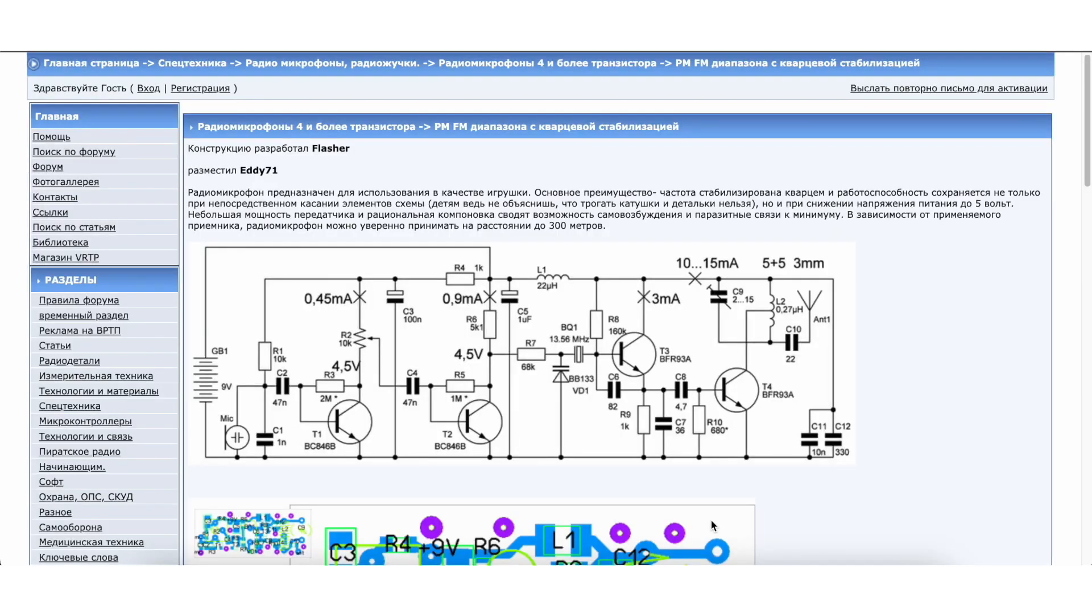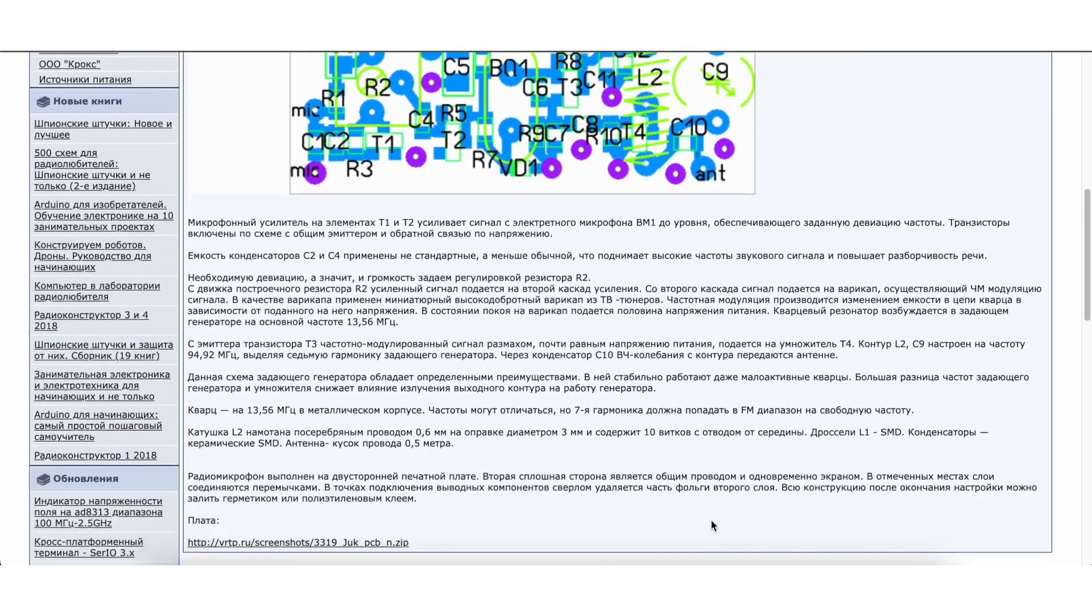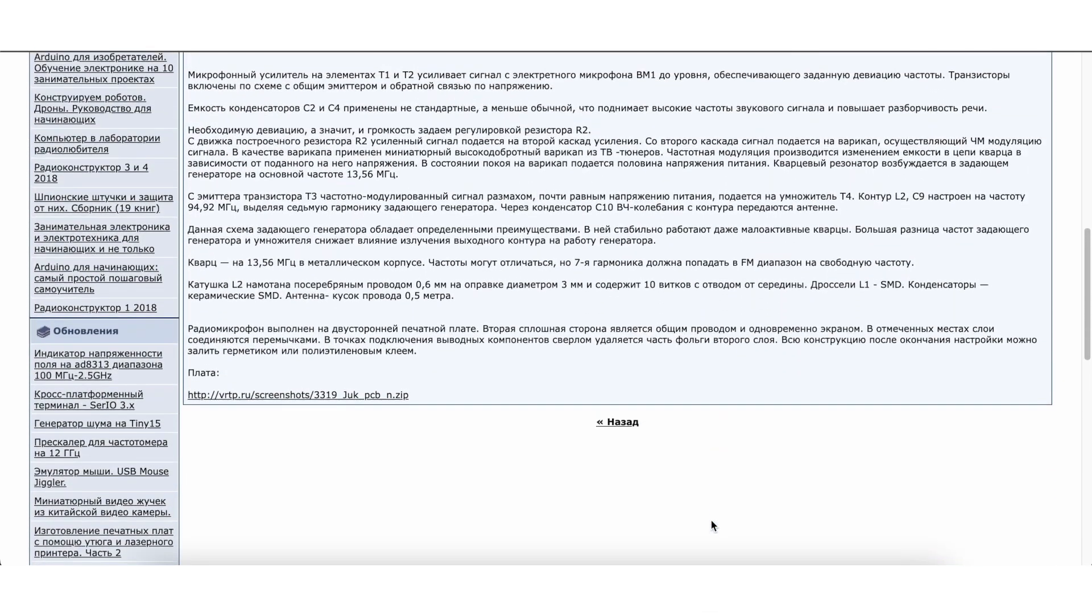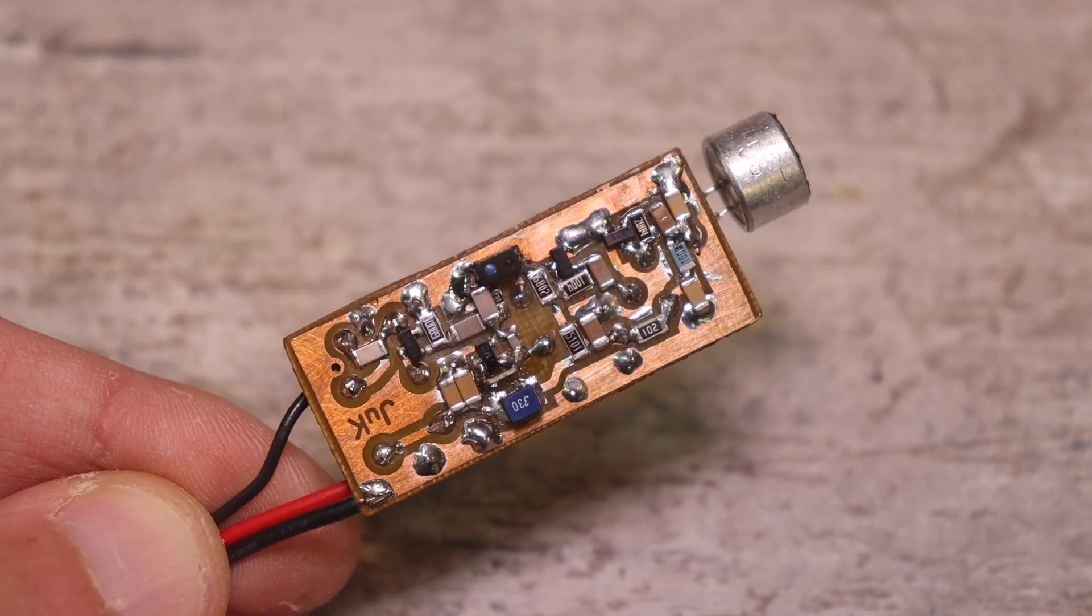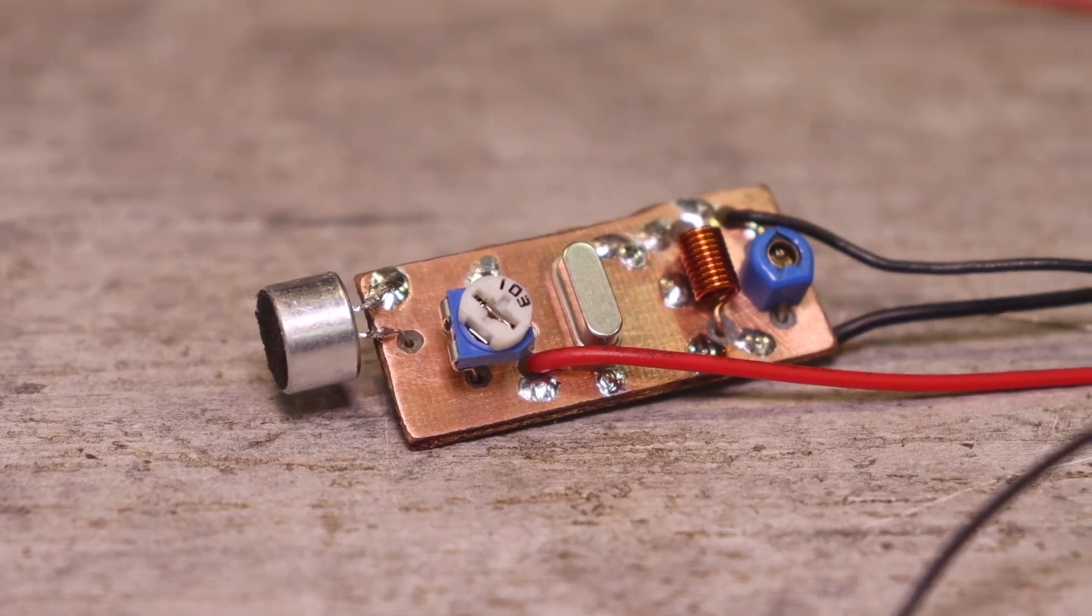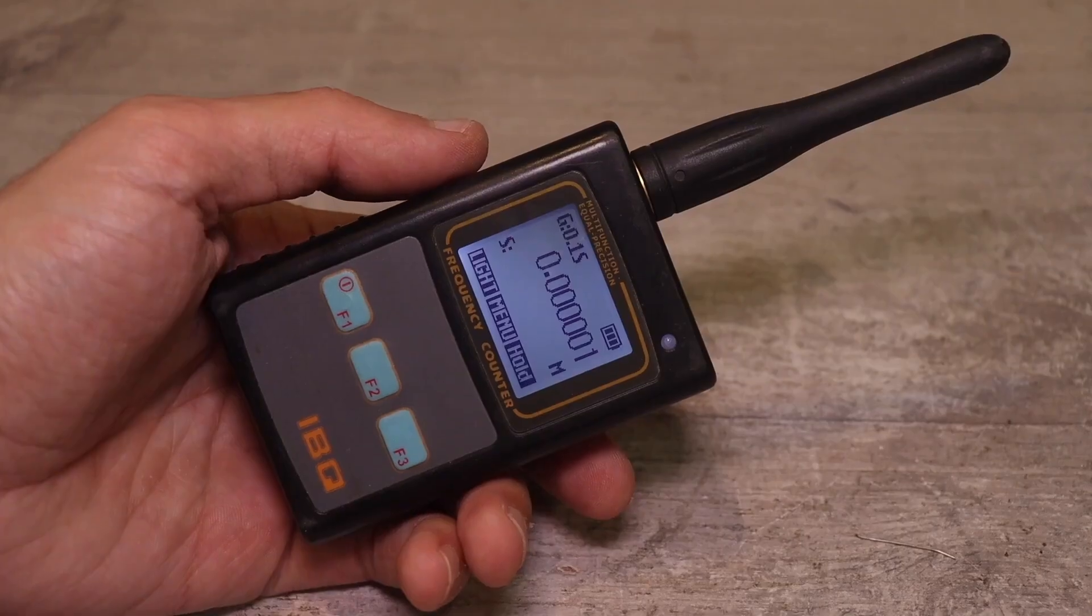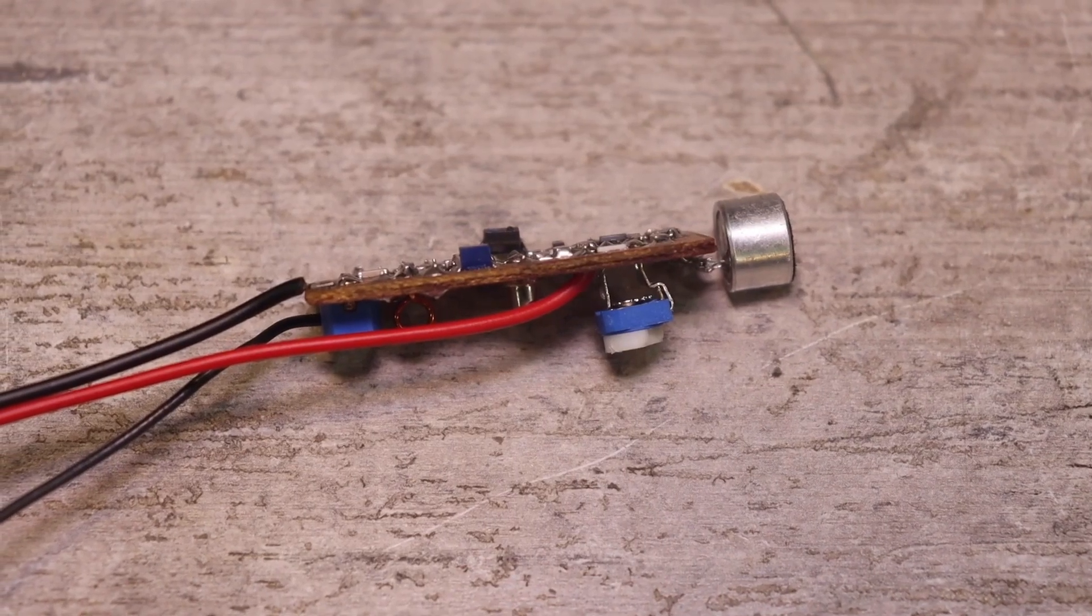One of these bugs was presented on the VRTP website by a person with the nickname Flasher. You will find a link to the original source in the description. The transmitter is quite complex due to the fact that it is made on SMD components and there are quite a few of them. Also for precise adjustments of such things some equipment and basic knowledge in the field of receiving and transmitting devices are needed.